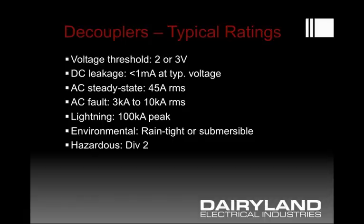The AC steady state current that can flow through the product being mitigated continuously is commonly in the neighborhood of 45 amps AC RMS, and the typical fault rating of the device is in the several thousand to perhaps 10,000 amp range.